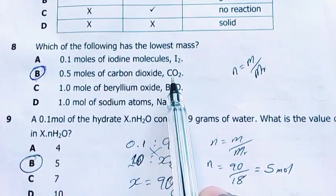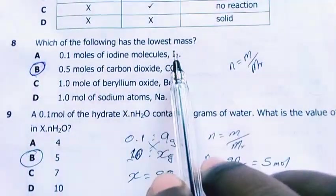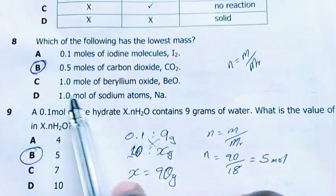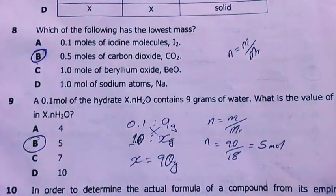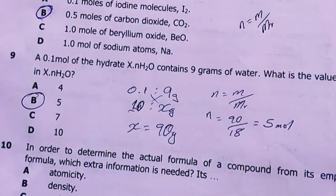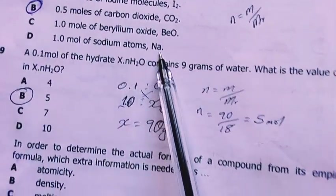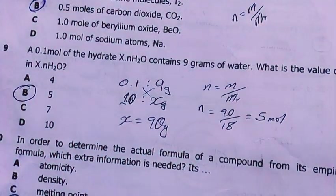My answer after I did this calculation was B, 0.5 moles of carbon dioxide. It will have 22 grams because one mole will have 44 grams. Iodine has a very high mass. Beryllium oxide, very high mass, one mole. Sodium will have quite a high mass, which is 24. But my answer here came out as carbon dioxide.